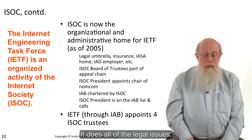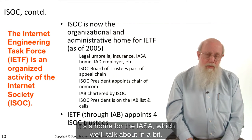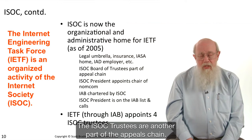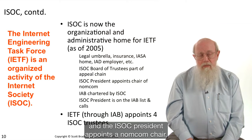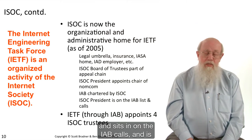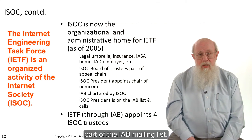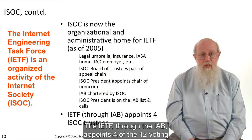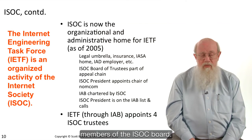The ISOC is now basically the home for the IETF. It handles all of the legal issues, provides insurance, and is home for the IASA, which we'll talk about in a bit. The ISOC trustees are another part of the appeals chain. The IAB is chartered by the Internet Society, and the ISOC president appoints a NomCom chair and sits in on the IAB calls. The IETF, through the IAB, appoints four of the 12 voting members of the ISOC board.